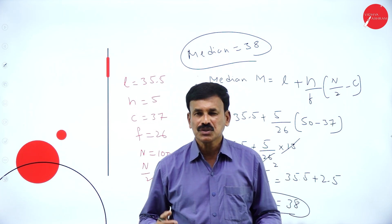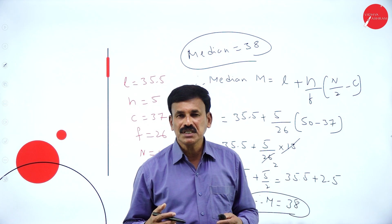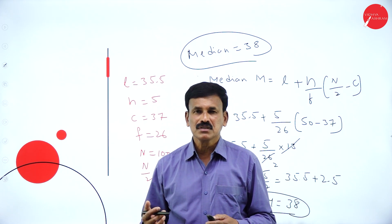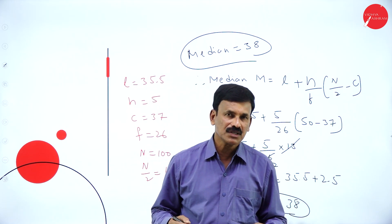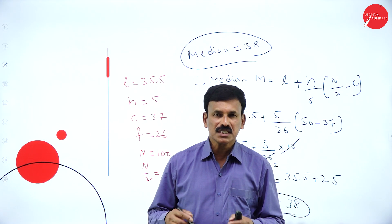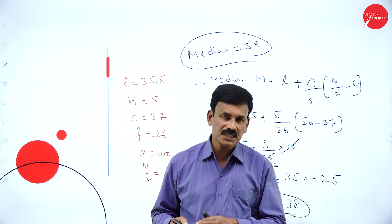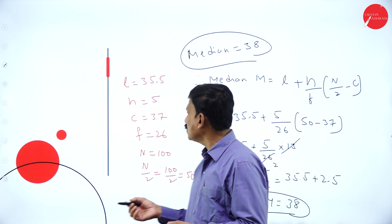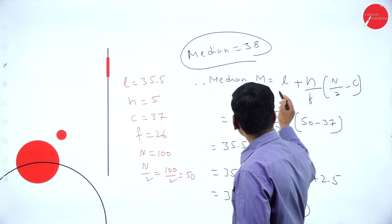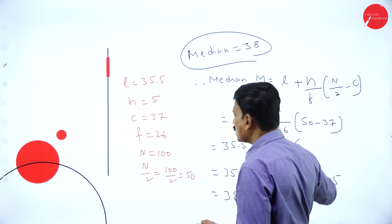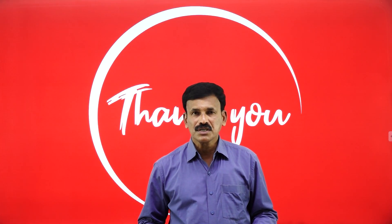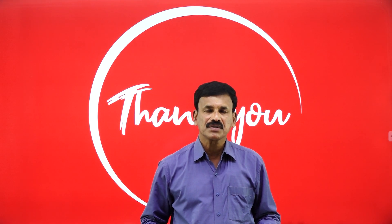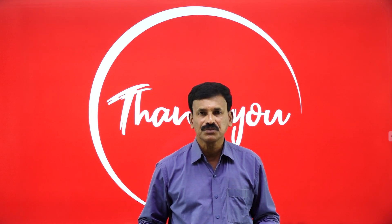Hope you followed. This is how we calculate the median for the given data. Whenever the class interval is discontinuous, just make the given data continuous and then solve using the formula L plus H by F into n by 2 minus C. That is all regarding today's session. Let us meet with a different concept in the next session. Thank you very much.